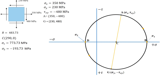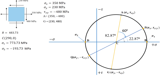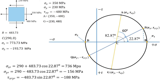Now we are going to calculate the equivalent state of stress if the element is oriented theta equals 30 degrees clockwise. The angle theta will be 2·theta with the same direction on the circle. Therefore, in order to calculate the equivalent stress components sigma x prime, sigma y prime, and tau x prime y prime, we need to rotate line CA by 60 degrees clockwise on the Mohr's circle. Using trigonometry: sigma x prime equals 290 plus 483.73 times cos(22.87°), which equals 736 MPa. Sigma y prime equals 290 minus 483.73 times cos(22.87°), which equals negative 156 MPa. Tau x prime y prime equals 483.73 times sin(22.87°), which equals negative 186 MPa.